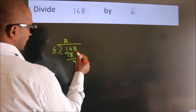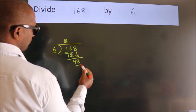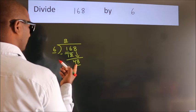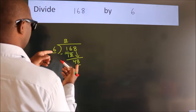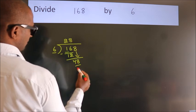After this, bring down the beside number. So, 8 down. 48. When do we get 48? In 6 table, 6 eights, 48.